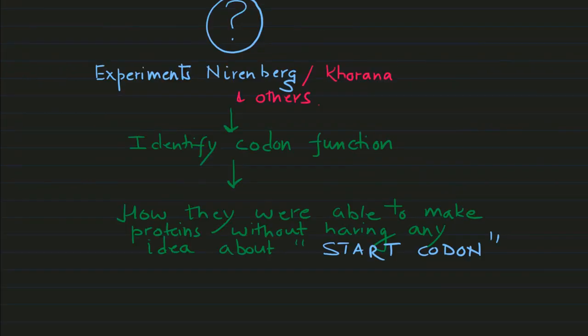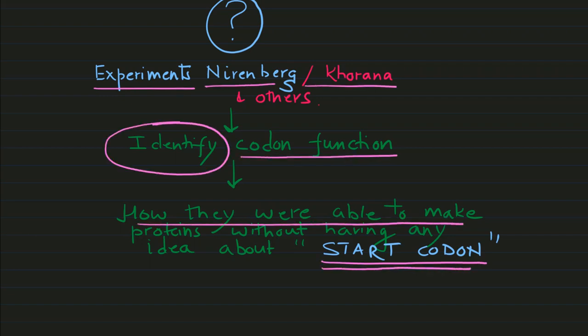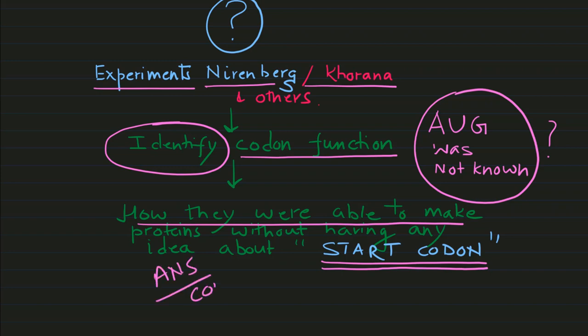I have a question for everyone: how were proteins synthesized without knowing there was an initiation codon? They were trying to understand the function and were not aware that AUG is an initiation codon, so how were the experiments conducted? Please answer in the comment section.